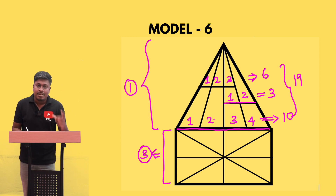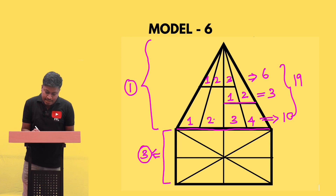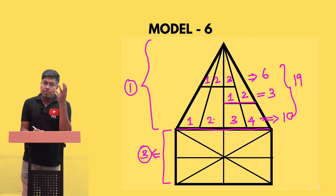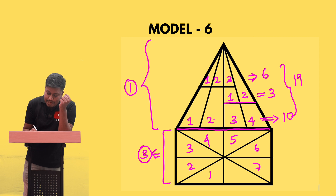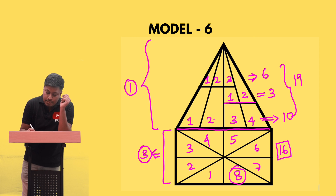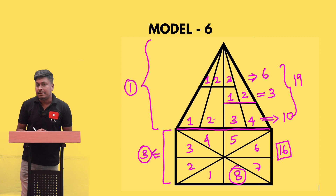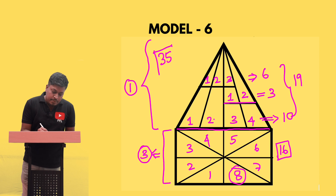In the topmost area we have 19 triangles. Now for the bottom area, which is based on model number three, we number the sections: 1, 2, 3, 4, 5, 6, 7, 8. The next step is to find the largest number, which is 8, and multiply it by 2 to get 16. So the bottom diagram has 16 triangles. Adding both: 19 plus 16 gives a total of 35 triangles.